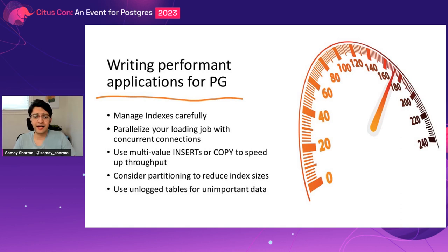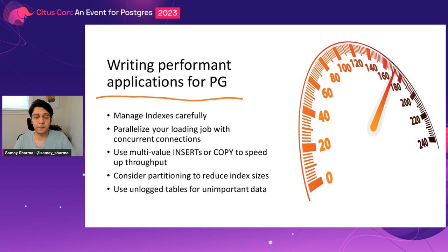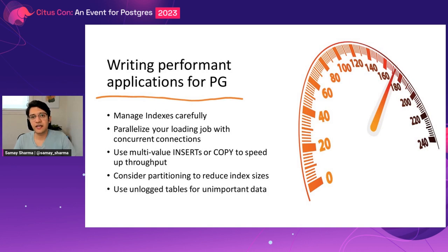Parallelize your loading jobs with concurrent connections — very important for OLTP workloads. You can bypass the effect of latency by having many parallel connections. For bulk loads, the COPY command can only use one core, so using concurrency helps use all cores. Batching always helps and doesn't mean compromising real-timeness. Micro-batching — batching every 10,000 or 100,000 rows and uploading them as a COPY command — gives much better throughput than single-row inserts.